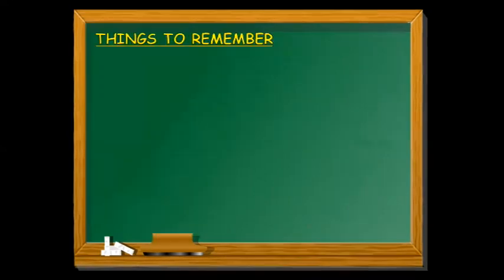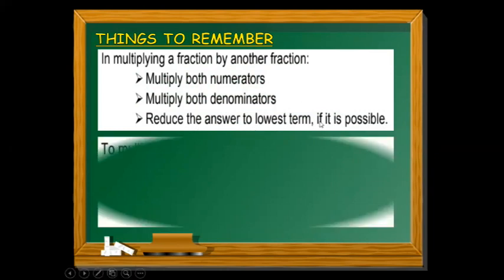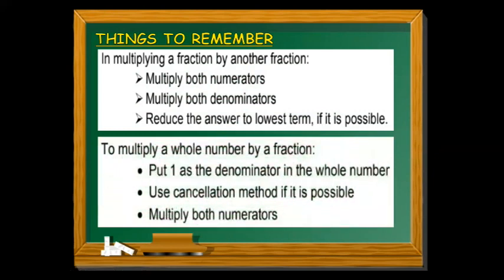Things to remember in multiplying fractions: to multiply a fraction by another fraction, multiply both numerators, then multiply both denominators, and reduce the answer to lowest terms if possible. To multiply a whole number by a fraction, put 1 as the denominator of the whole number, use the cancellation method if possible, multiply numerators and denominators, then reduce the answer to lowest terms.